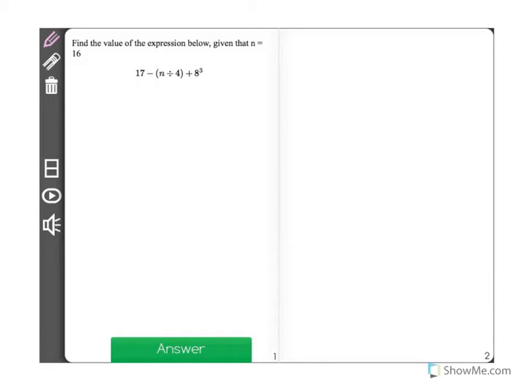Find the value of the expression below, given that n equals 16. 17 minus n divided by 4 plus 8 to the third.